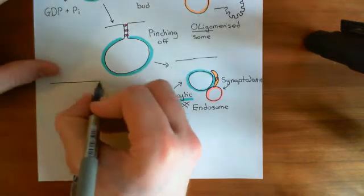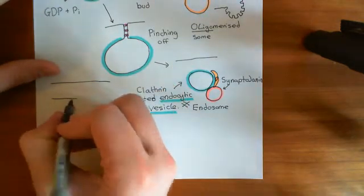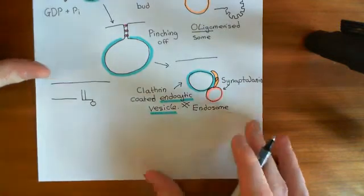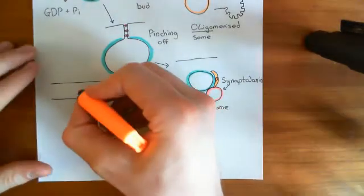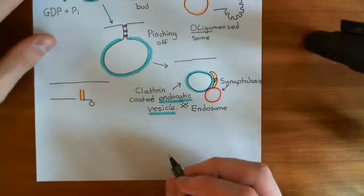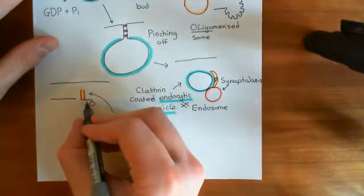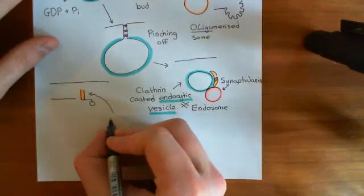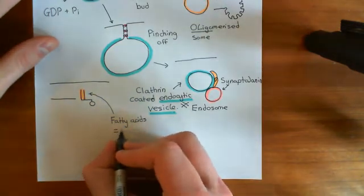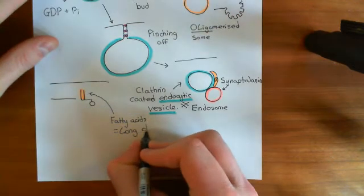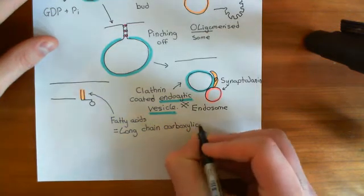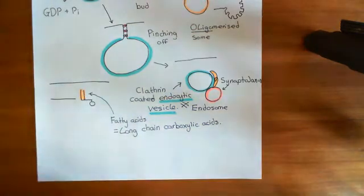Before we can understand the structure of PIP2, we need to look at the structure of a normal phospholipid. A normal phospholipid can be denoted like so. These two vertical lines, colored in orange, represent the long-chain carboxylic acids — the fatty acids — which are esterified to the first and second alcohol groups of the glycerol molecule. These are fatty acids, also known as long-chain carboxylic acids.